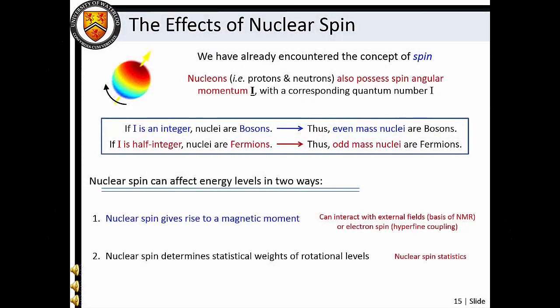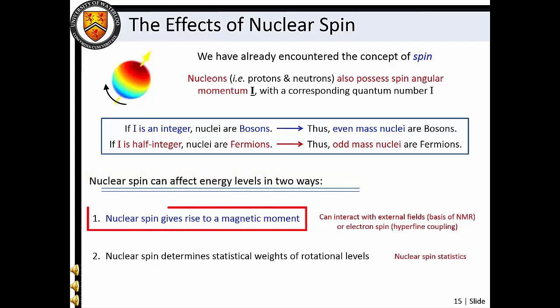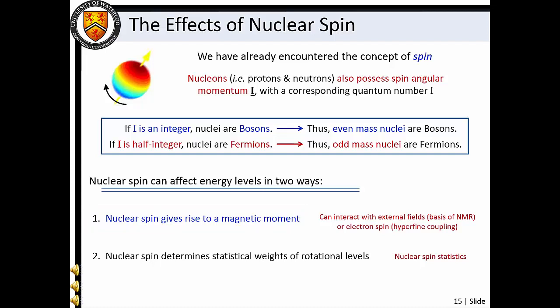The effects of nuclear spin are an important consideration in spectroscopy. Nuclear spin can affect the energy level structure of a molecule in two ways. Like electron spin, nuclear spin gives rise to a magnetic moment. The nuclear magnetic moment can interact with the electron magnetic moment to give rise to hyperfine splittings in spectra, and it can interact with external magnetic fields to lift nuclear spin state degeneracies. The topic of hyperfine spectral splitting will not be covered in Chemistry 209. The interaction of nuclear magnetic moments with external fields, however, forms the basis of NMR spectroscopy, which we will discuss in more detail in Masterclasses 13 and 14.